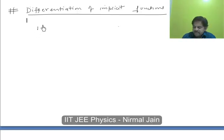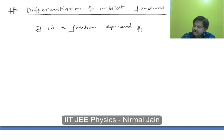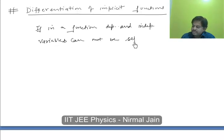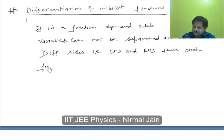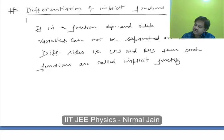So we can write the definition of implicit functions as: if in a function, dependent and independent variables cannot be separated on two different sides, that is LHS and RHS, then such functions are called implicit functions.